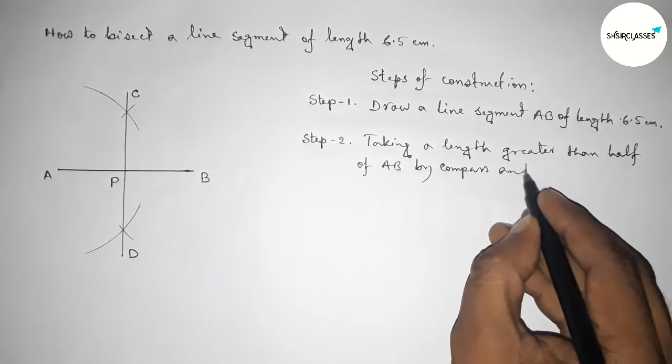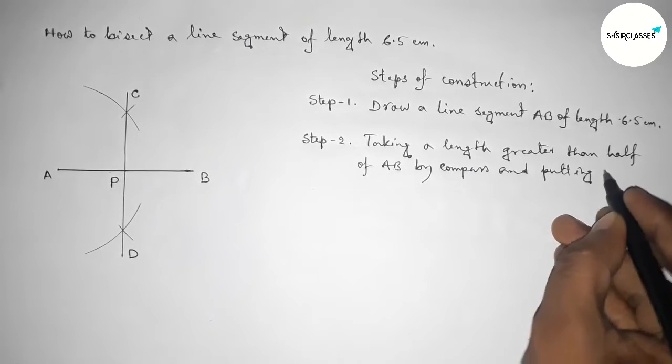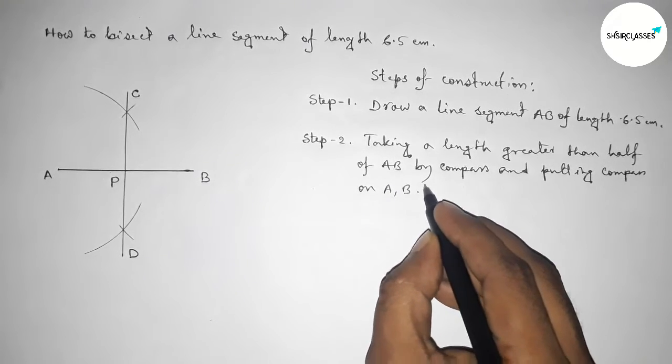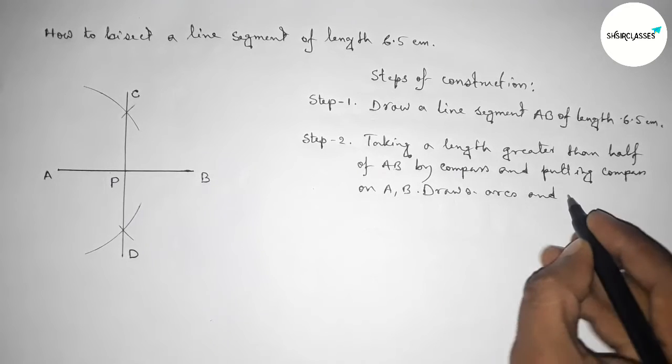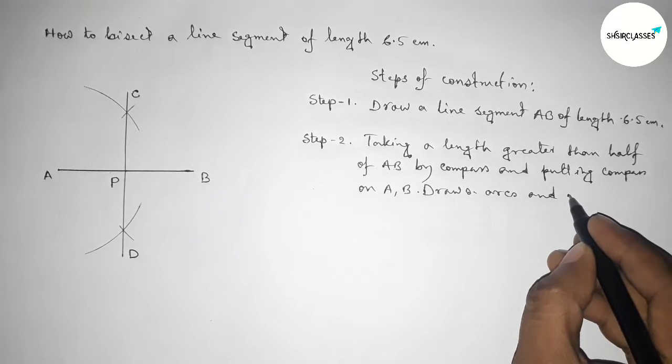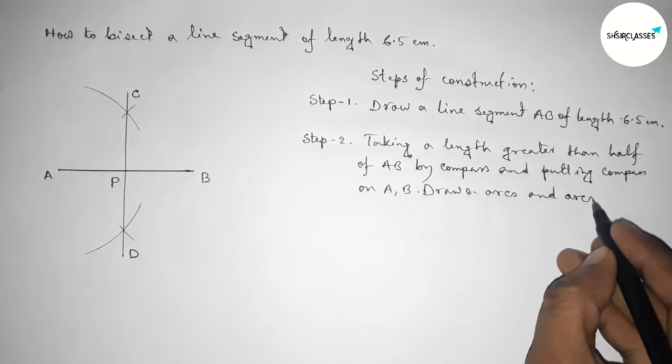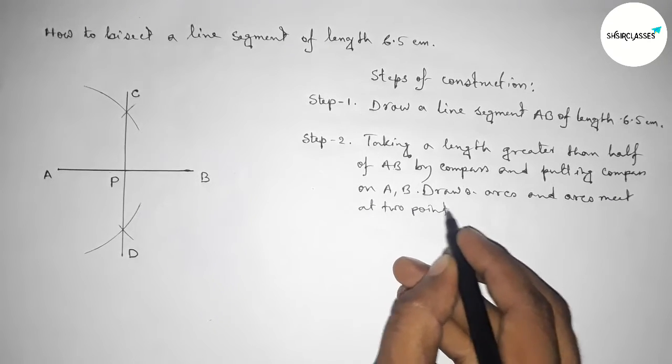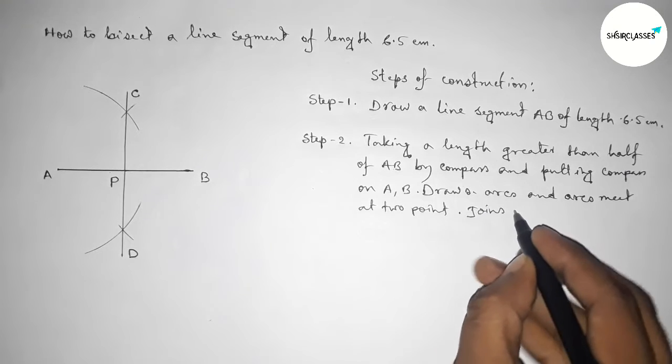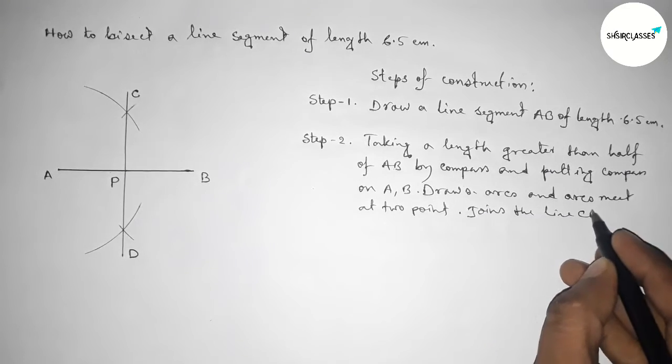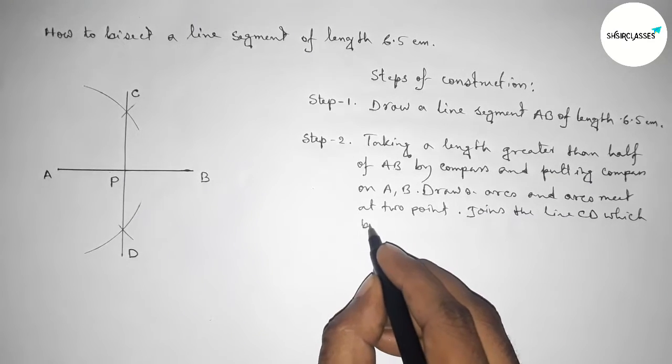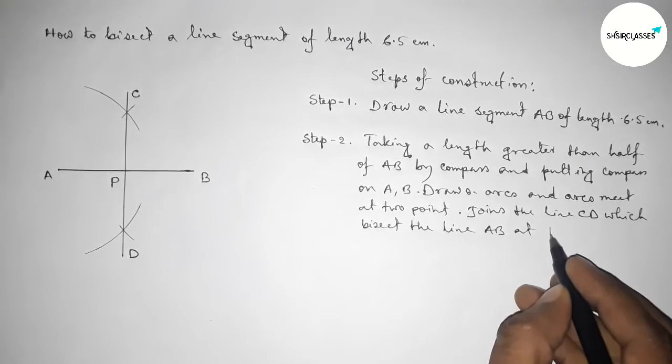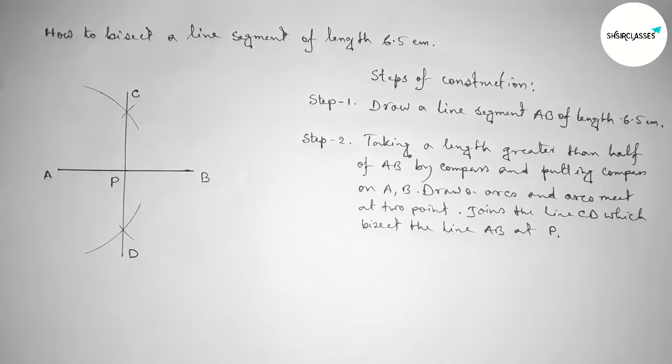Putting the compass on point A and B and drawing arcs, and the arcs meet at two points. Then joining the line CD which bisects the line AB at point P.